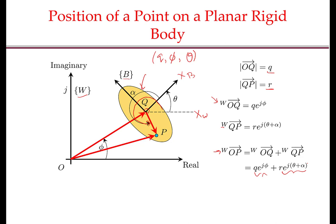There is one point to note here. I was writing QP in the world frame because if I do not write QP in the world frame, I cannot add OQ and QP — to add two vectors they have to be in the same frame. If I write QP in the body frame, QP in the body frame would be R e to the power of jα, because in the body frame α is the angle made with the body frame x-axis.